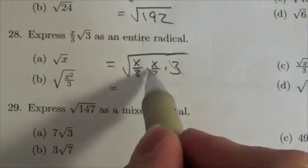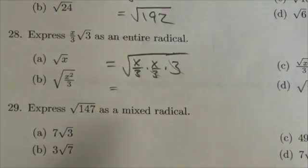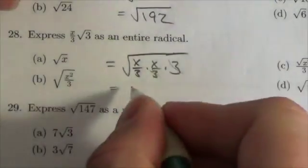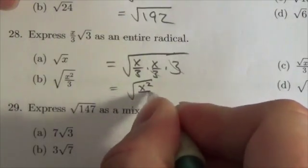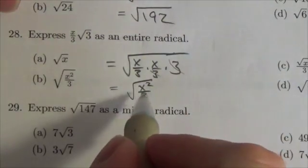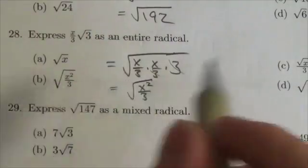Now that 3 will cancel with that one and so I'm left with x squared over 3. So this will be the square root of x squared divided by 3. Now within the radical, that 3 there is within the radical.